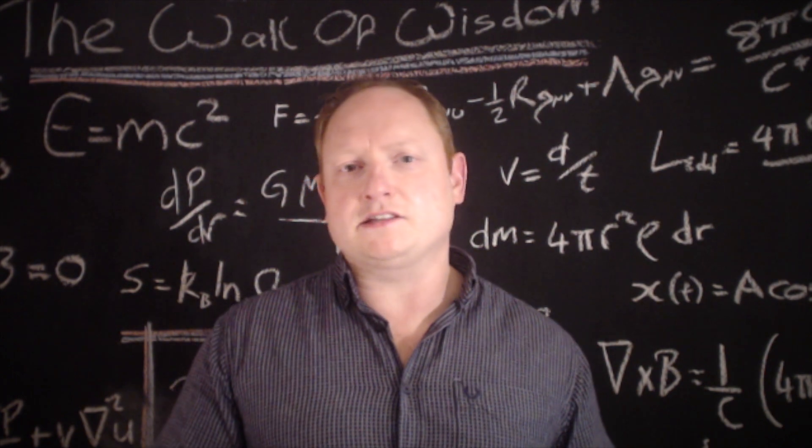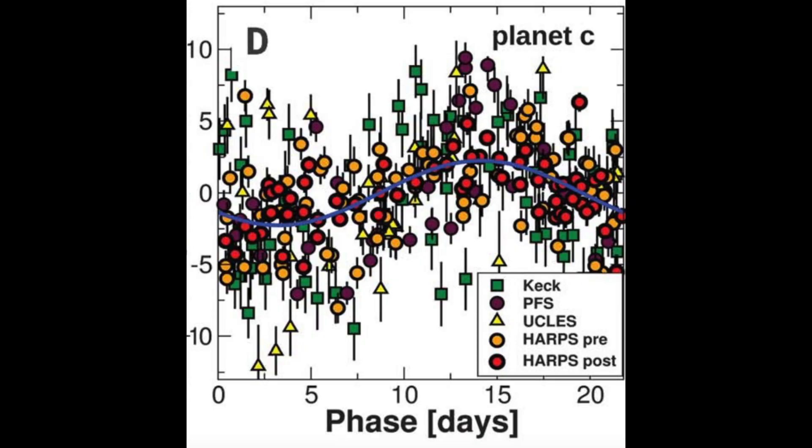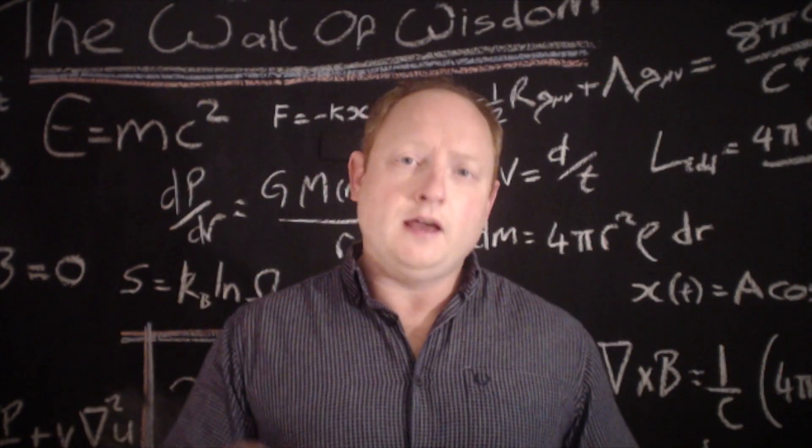The second planet in the system, GJ887c, orbits the star in only 22 days, and with a Doppler velocity amplitude of three meters per second, the minimum mass of this planet is eight Earth masses. We can see these planets are orbiting very close to their star. Their years are both less than 22 days, which is very different to what we find in the solar system, where here, Mercury is the closest planet to the Sun, with an orbital period of 88 days.